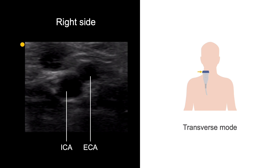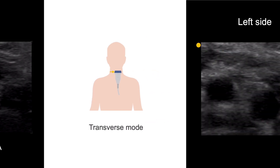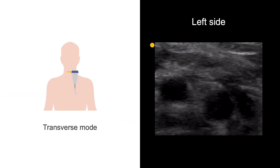The artery on the right side of the image, that is the medial side of the neck, is the ECA. When performing an ultrasound on the left side of the neck, the larger, deeper artery on the right of the image — that is the lateral side of the neck — is the ICA. Again, the artery on the left side of the image, that is the medial side of the neck, is the ECA.